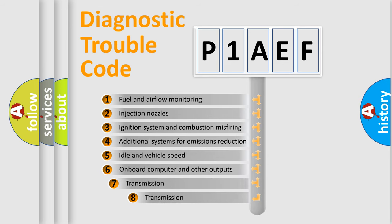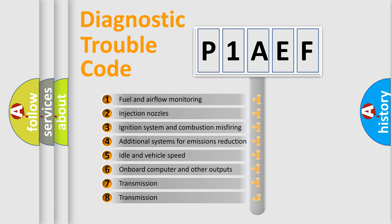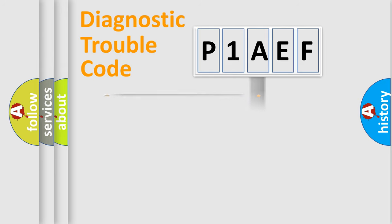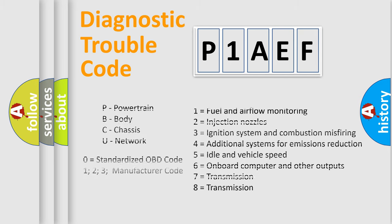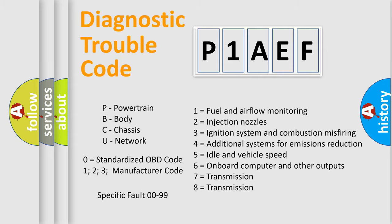The third character specifies a subset of errors. The distribution shown is valid only for the standardized DTC code. Only the last two characters define the specific fault of the group. Let's not forget that such a division is valid only if the second character code is expressed by the number zero.